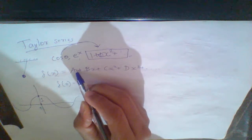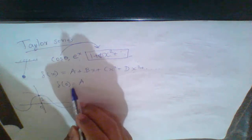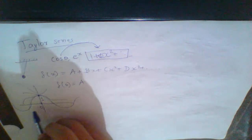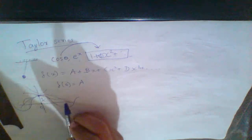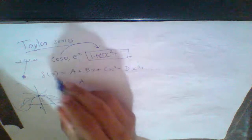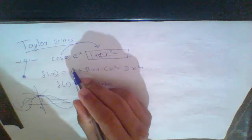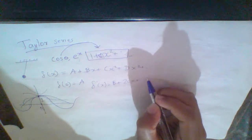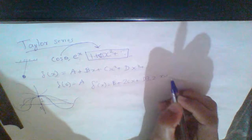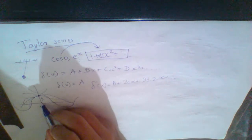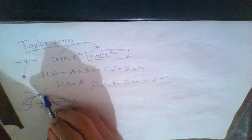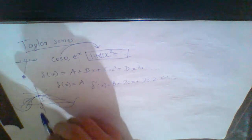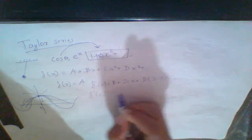We will substitute F of 0. F of 0 is equal to F of 0. Then, F of 1 is equal to 0. F of 0 is equal to F of 0. This gives us b. So b is the first derivative of f.